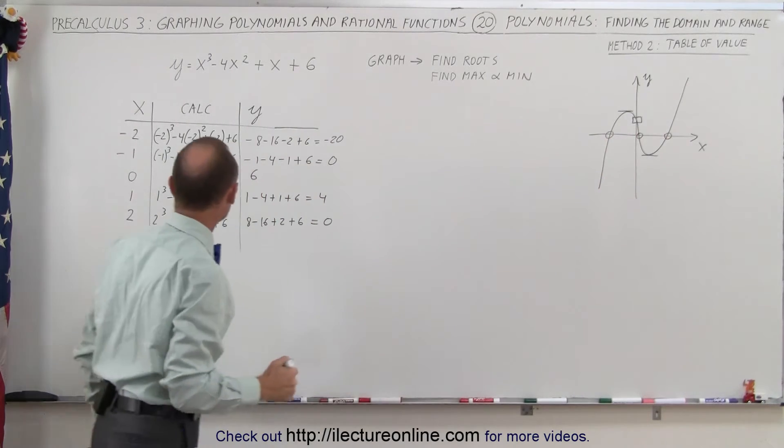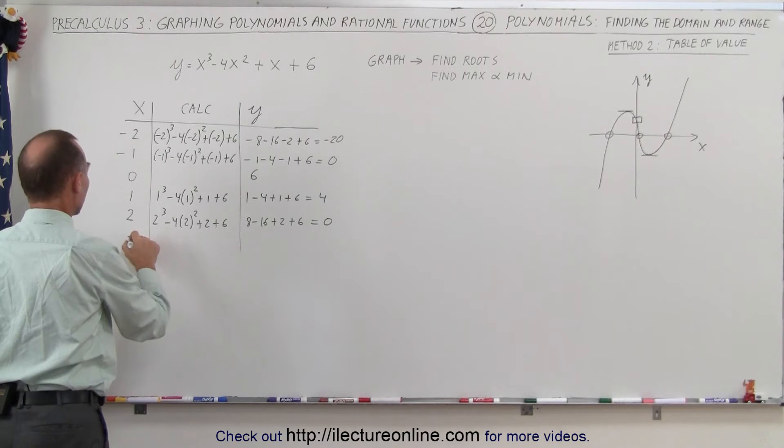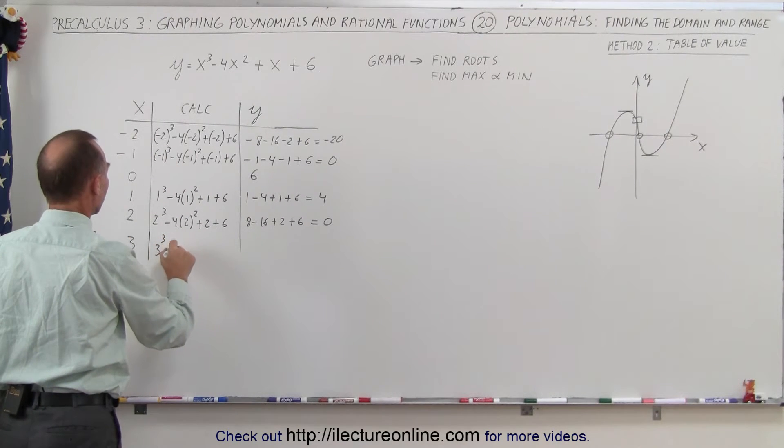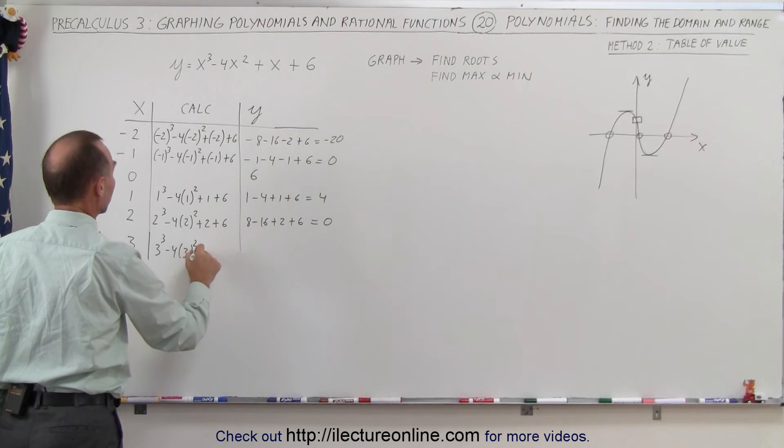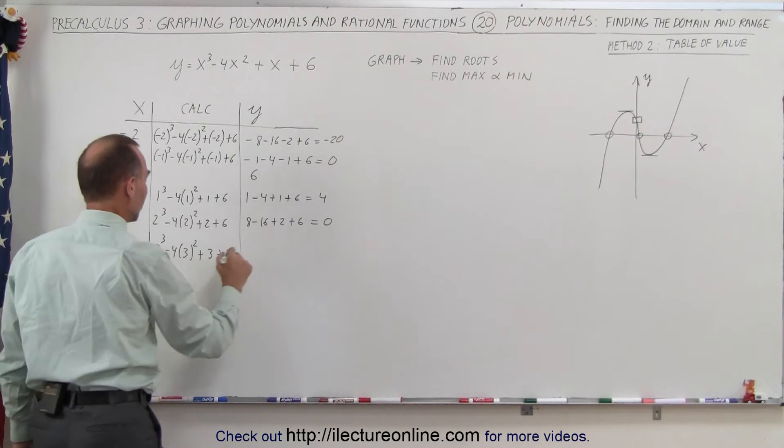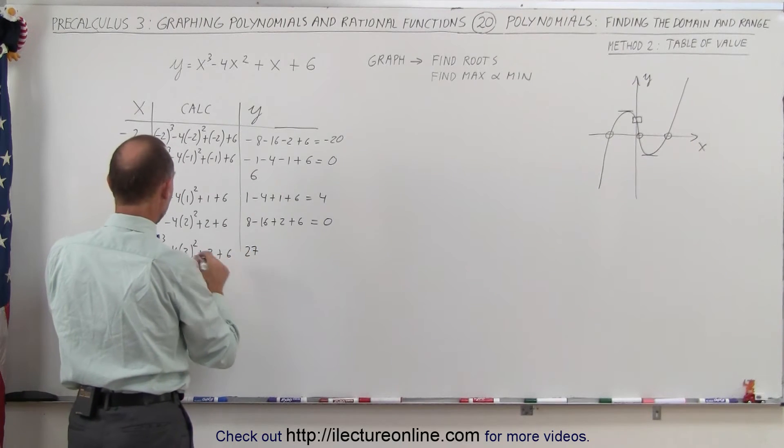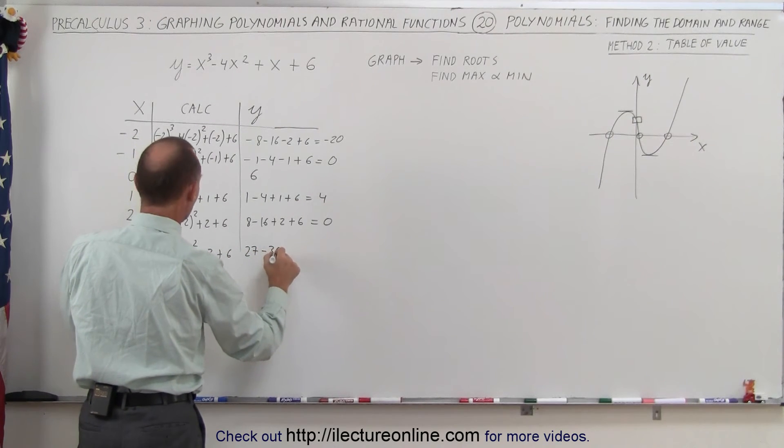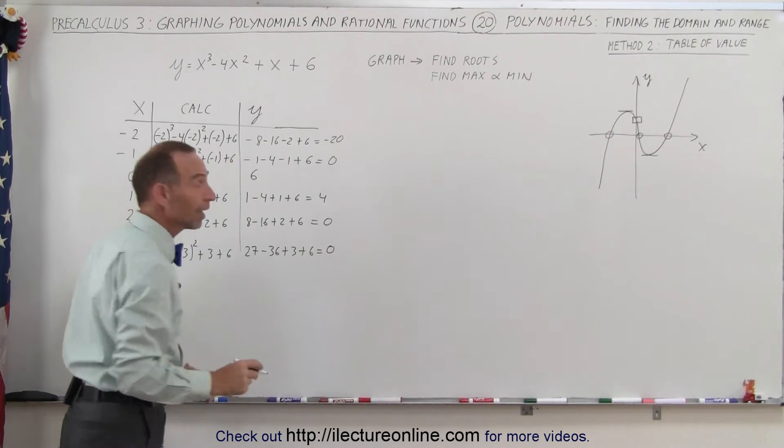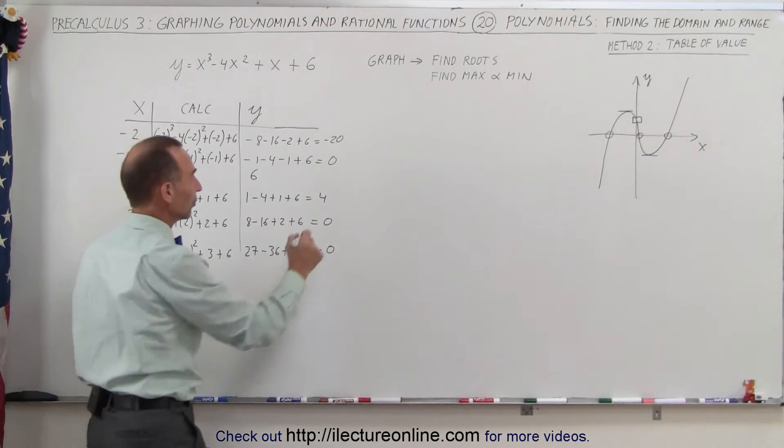Now let's see if we can find our third root, the number 3. So that would be 3 cubed minus 4 times 3 squared plus 3 plus 6 and so that would be 27, that would be 9 times the minus 4 is minus 36 plus 3 plus 6. That's also 0. It looks like I found all three of the roots.